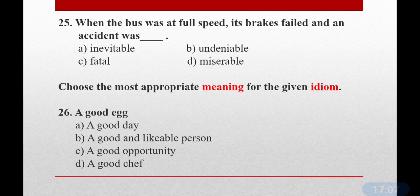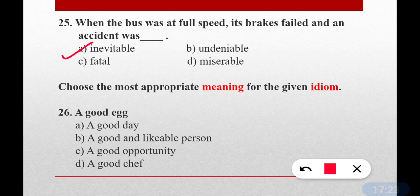Question number twenty-five: When the bus was at full speed its brake failed and an accident was dash. The correct word is option A — inevitable, meaning unavoidable. When the bus was at full speed and the brakes failed, it was obvious — the accident was inevitable, that is unavoidable. Nothing could stop it. Option A is correct.